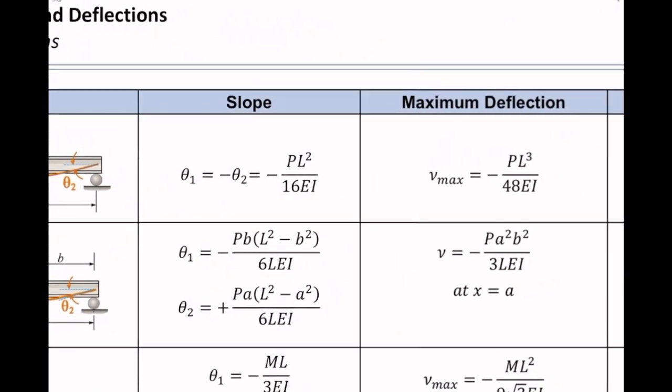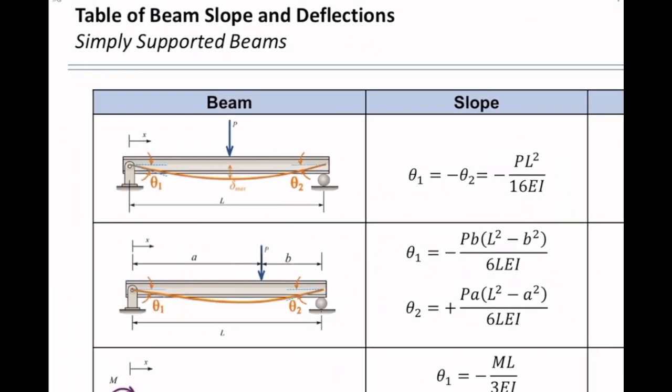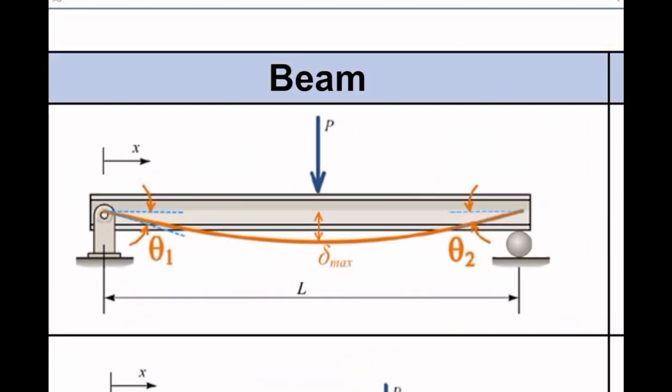Also, we do have maximum deflection or V max or delta max, which is the maximum deflection which in this case occurs at the mid-span.